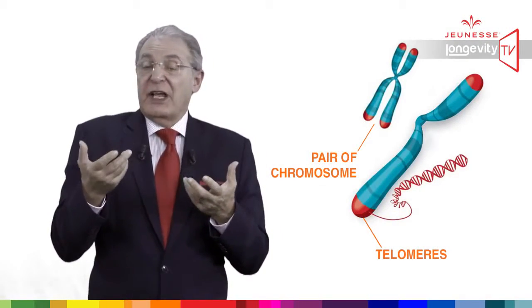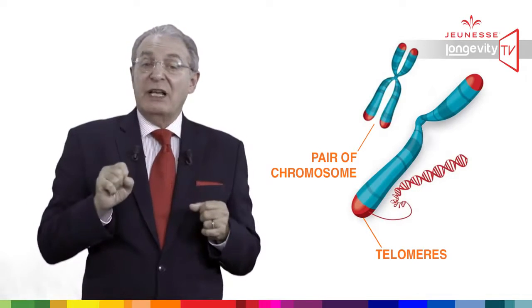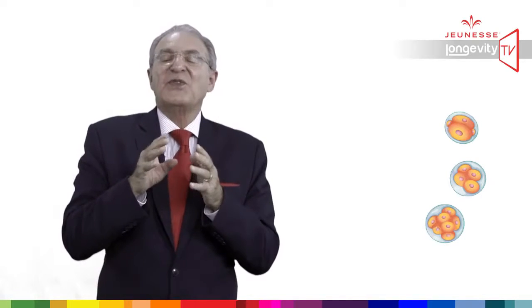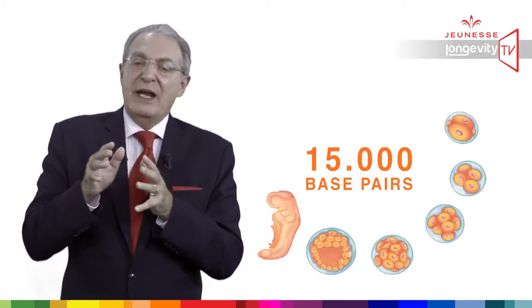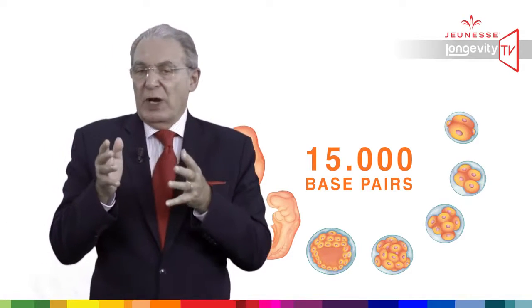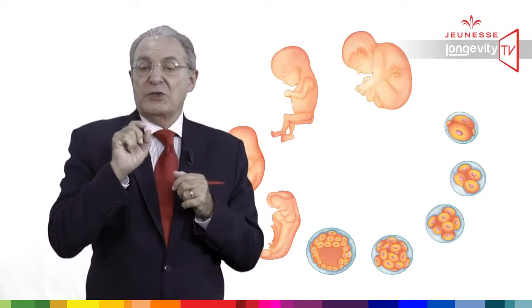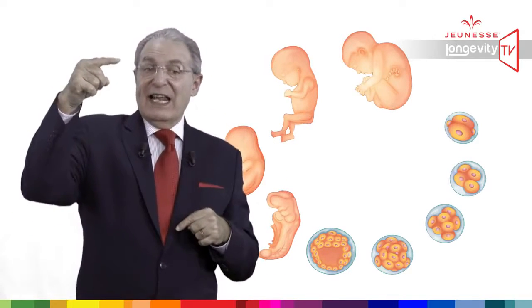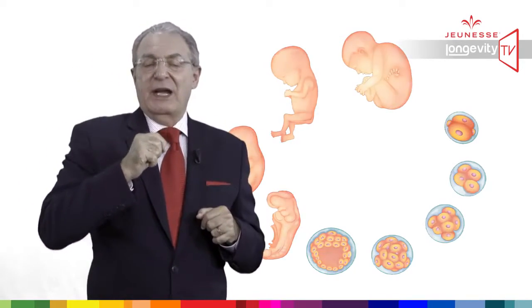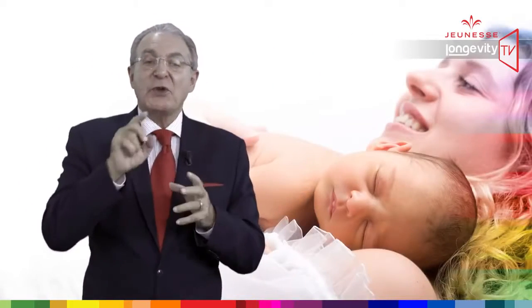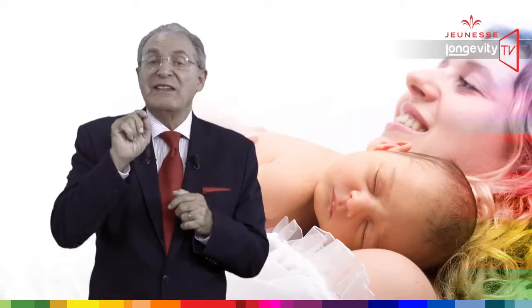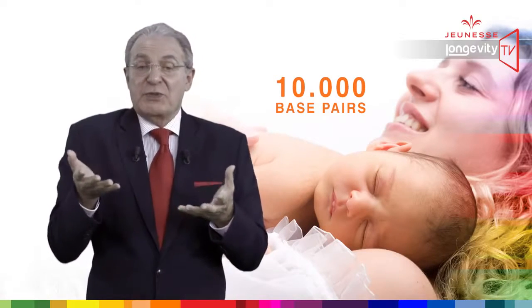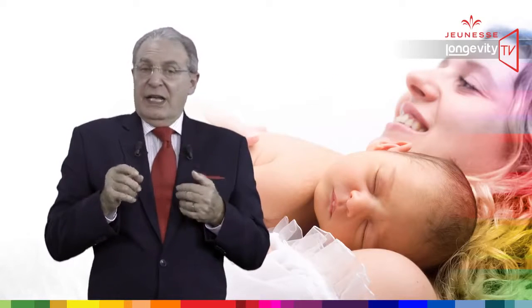Today we can measure the biological age of cells by the length of the telomere. When we are conceived, the embryo has about 15,000 base pairs in its telomere. By the way, a base pair is a standard unit of measurement in the chromosome, and the total length of a DNA strand is 3 billion base pairs. So after many replications, a newborn has only 10,000 base pairs in each telomere — we have already lost 33% of our telomere length.